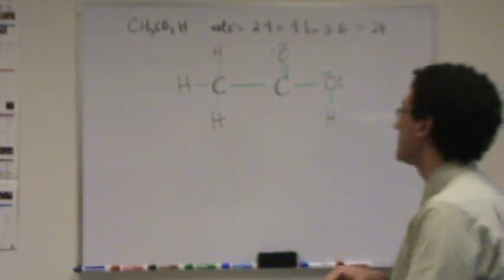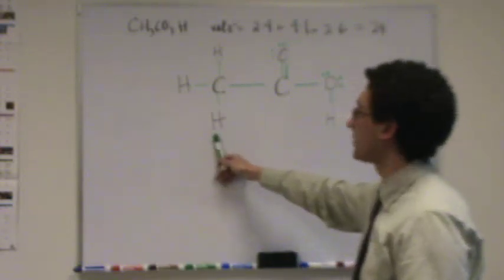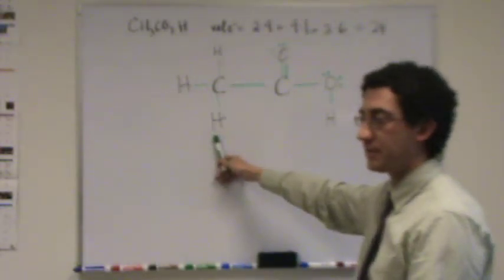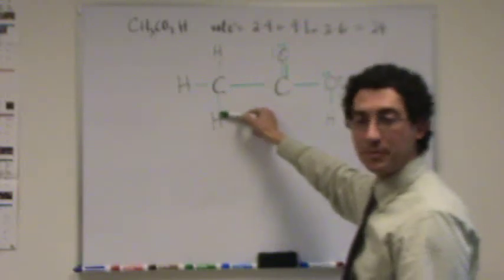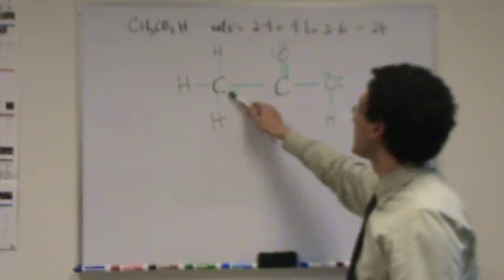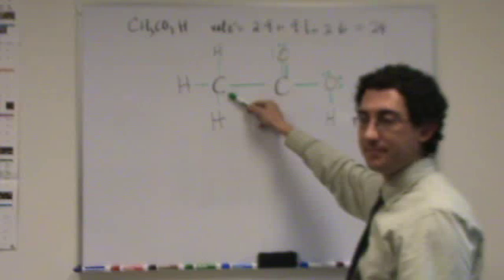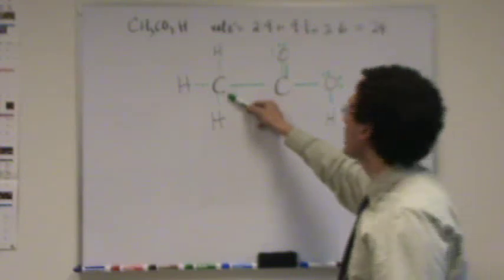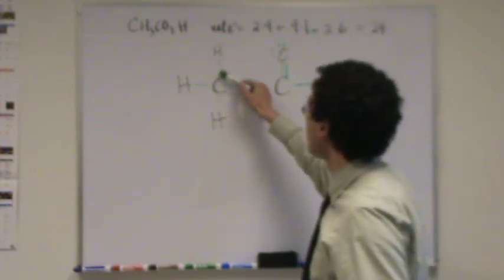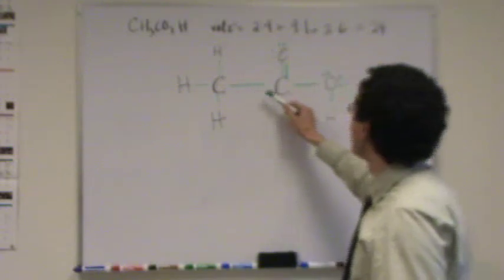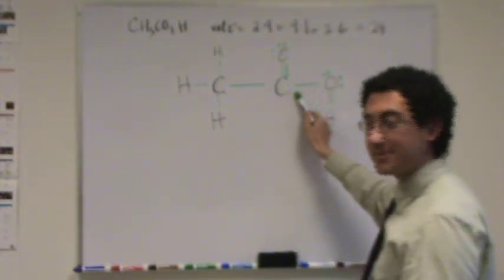Now, what's the formal charge? Let's start with hydrogen. What's the formal charge on every hydrogen? Neutral. Neutral, yeah. It's in column one and there's one point of attachment. How about this carbon? Neutral. It's in column four and there's one, two, three, four. Carbon, column four, one, two, three, four. That's neutral.